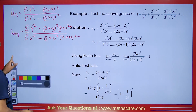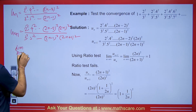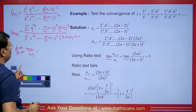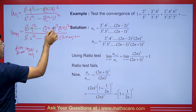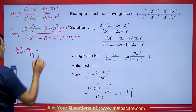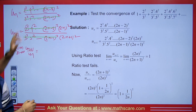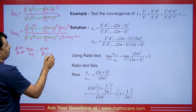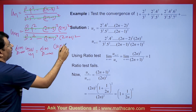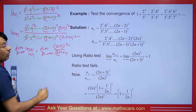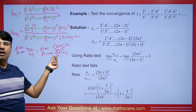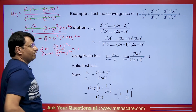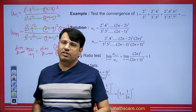Now we apply the D'Alembert ratio test: limit as n tends to infinity of u_{n+1}/u_n. After cancellation, we are left with the limit of (2n)²/(2n+1)². If we put n tends to infinity and take 2n common, the answer is 1. So the D'Alembert ratio test fails.